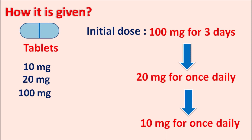In summary, leflunomide is a disease-modifying anti-rheumatic drug that acts as an anti-inflammatory agent and immunosuppressant, used in the treatment of rheumatoid arthritis and psoriatic arthritis. This drug mainly inhibits de novo synthesis of pyrimidines by inhibiting the enzyme dihydroorotate dehydrogenase. As pyrimidines are not synthesized, they are not incorporated into DNA or RNA, thereby reducing T cell proliferation and activation, and consequently reducing inflammatory and immune responses.